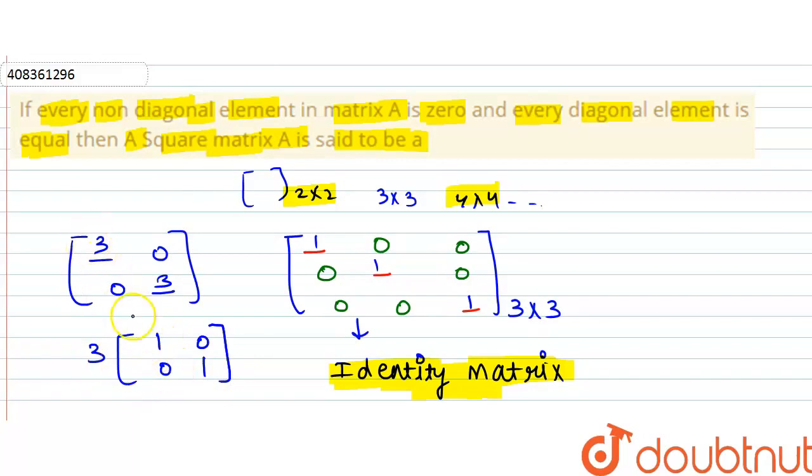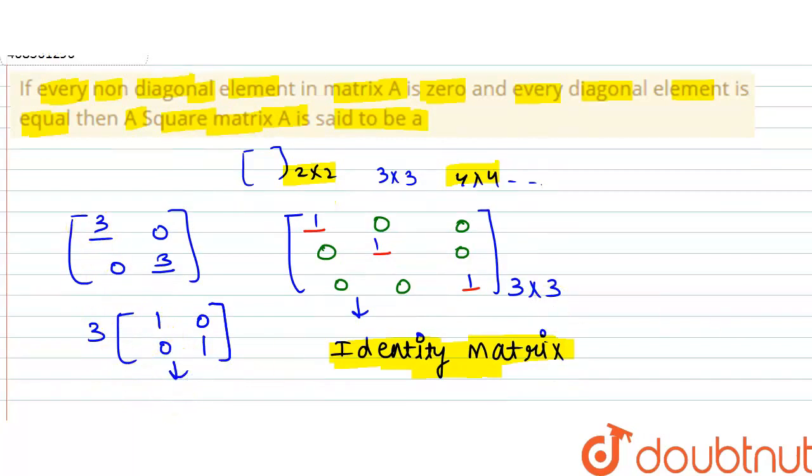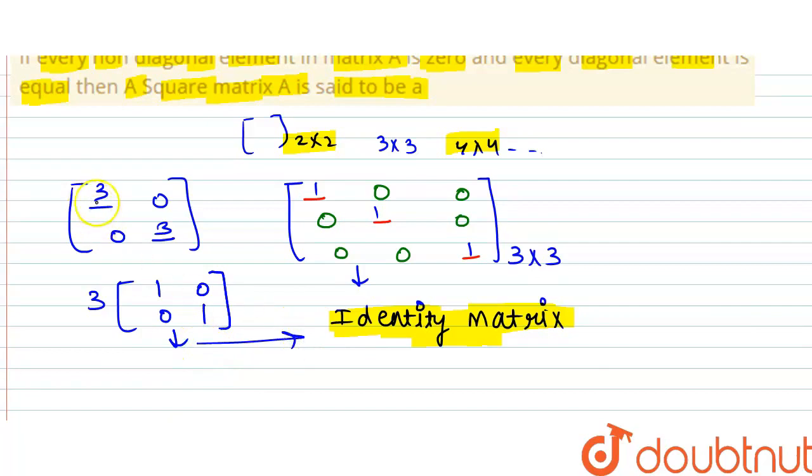If you multiply by 3, you get back the original matrix. So this is the identity matrix. It doesn't matter what element you take, as long as non-diagonal elements are 0 and diagonal elements are equal, it forms an identity matrix. Okay, thank you friends.